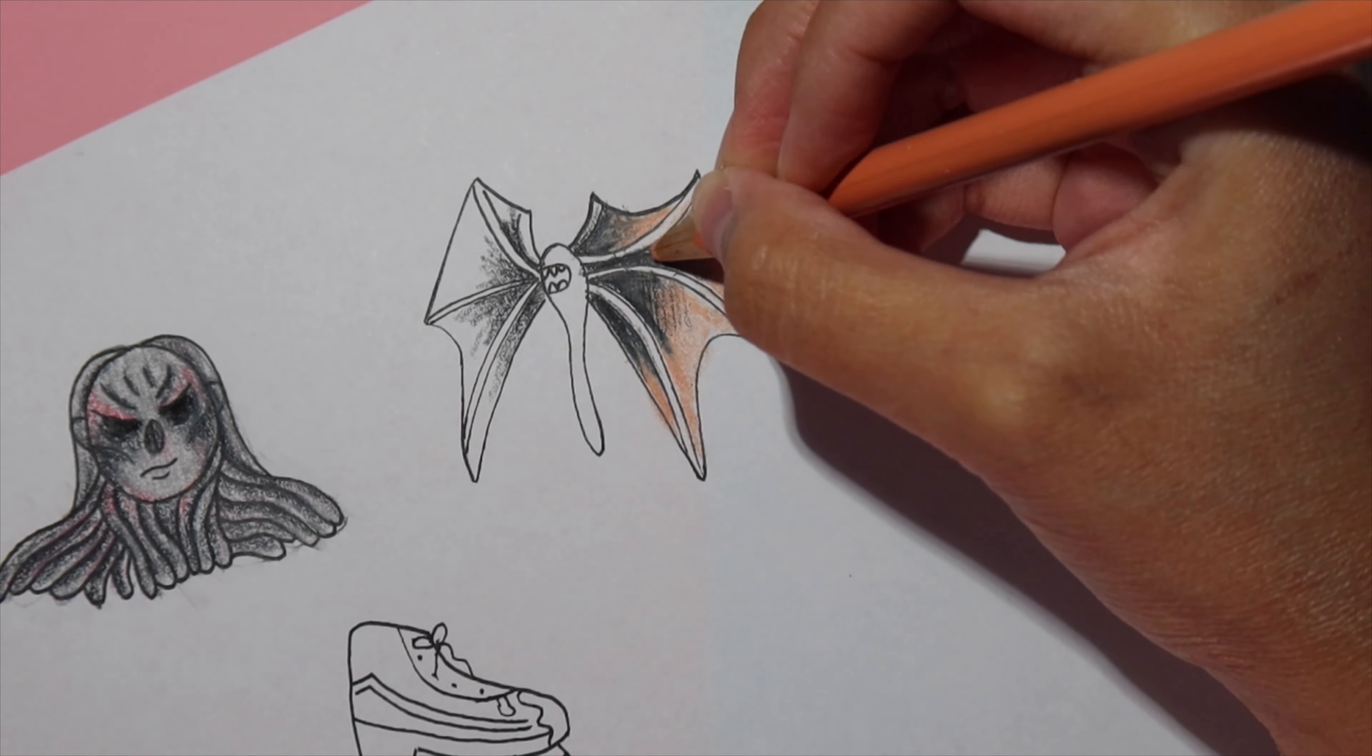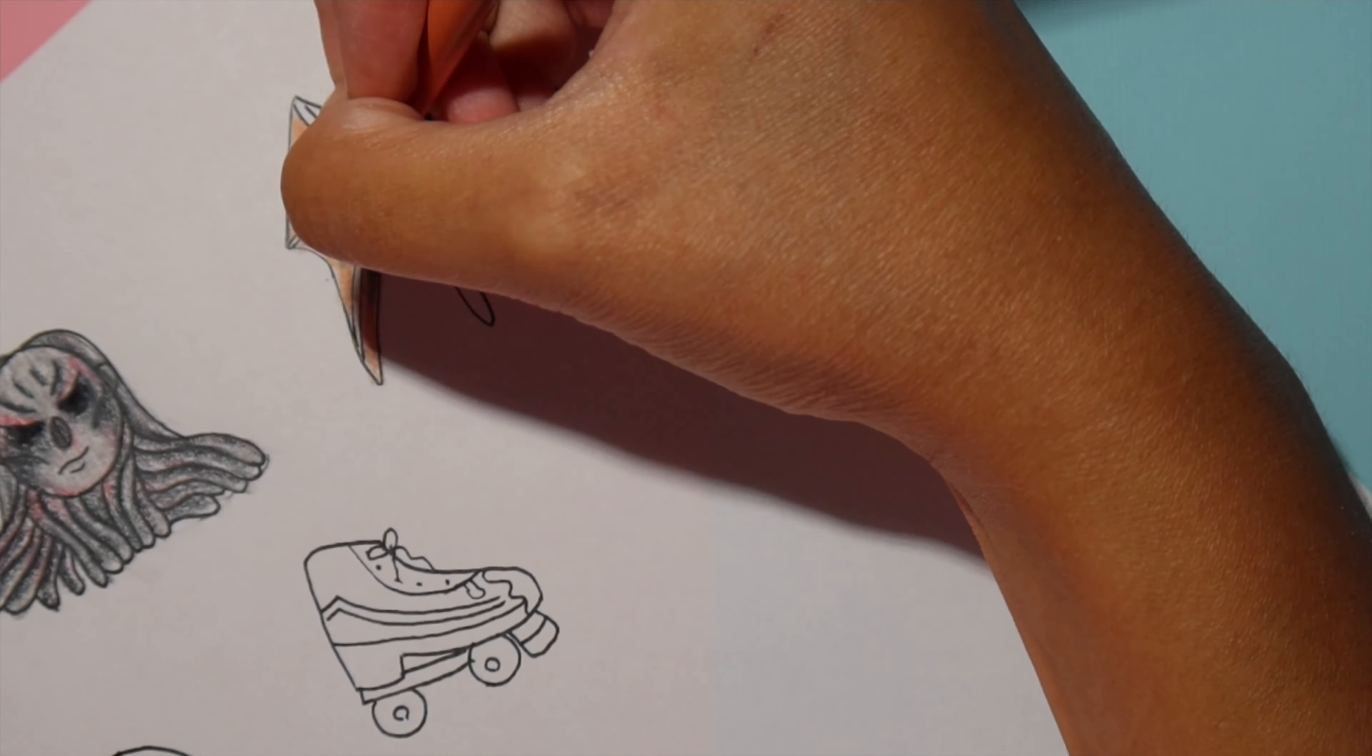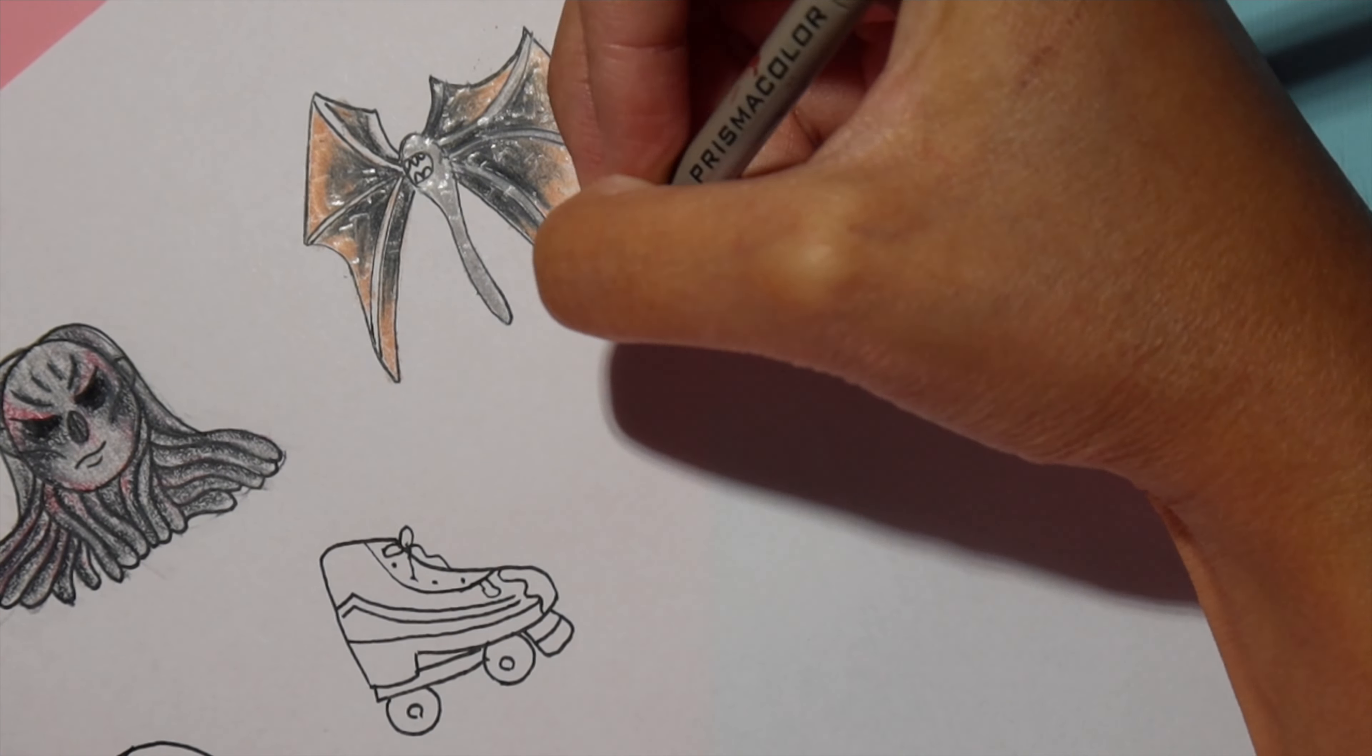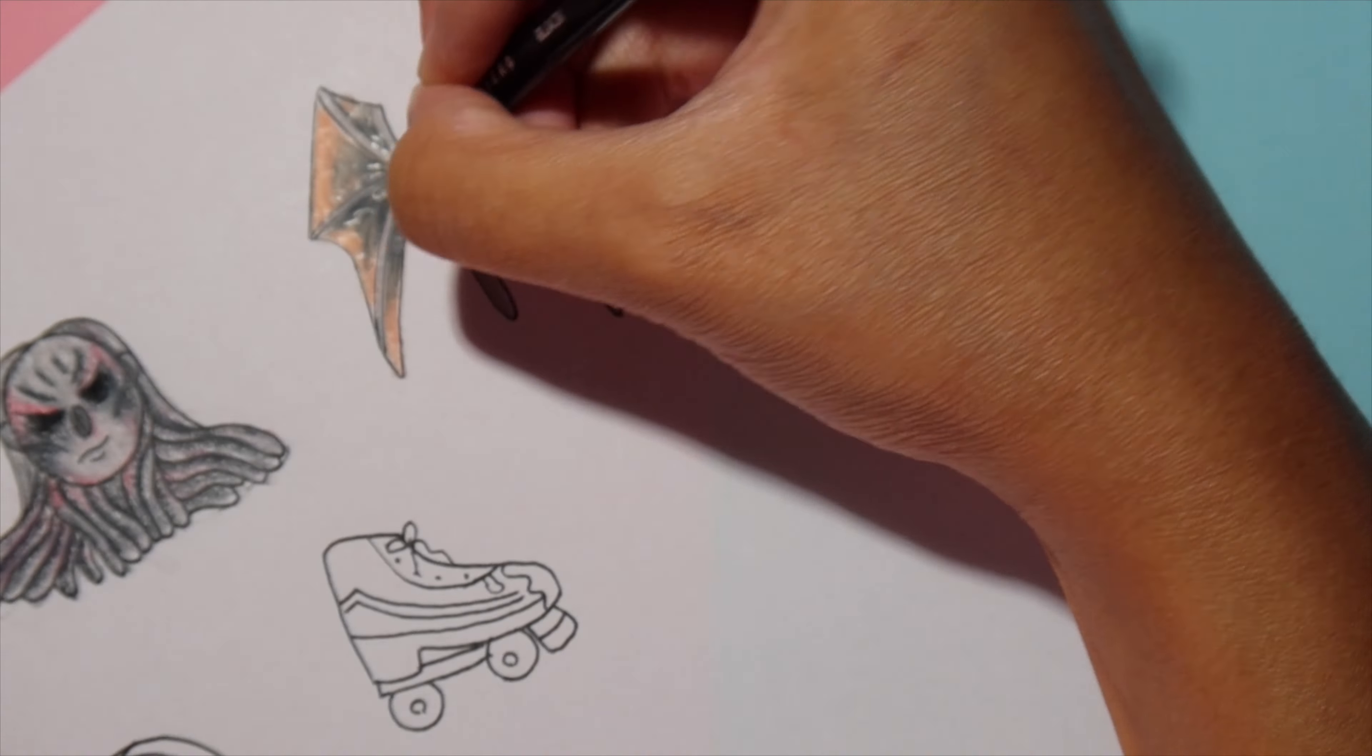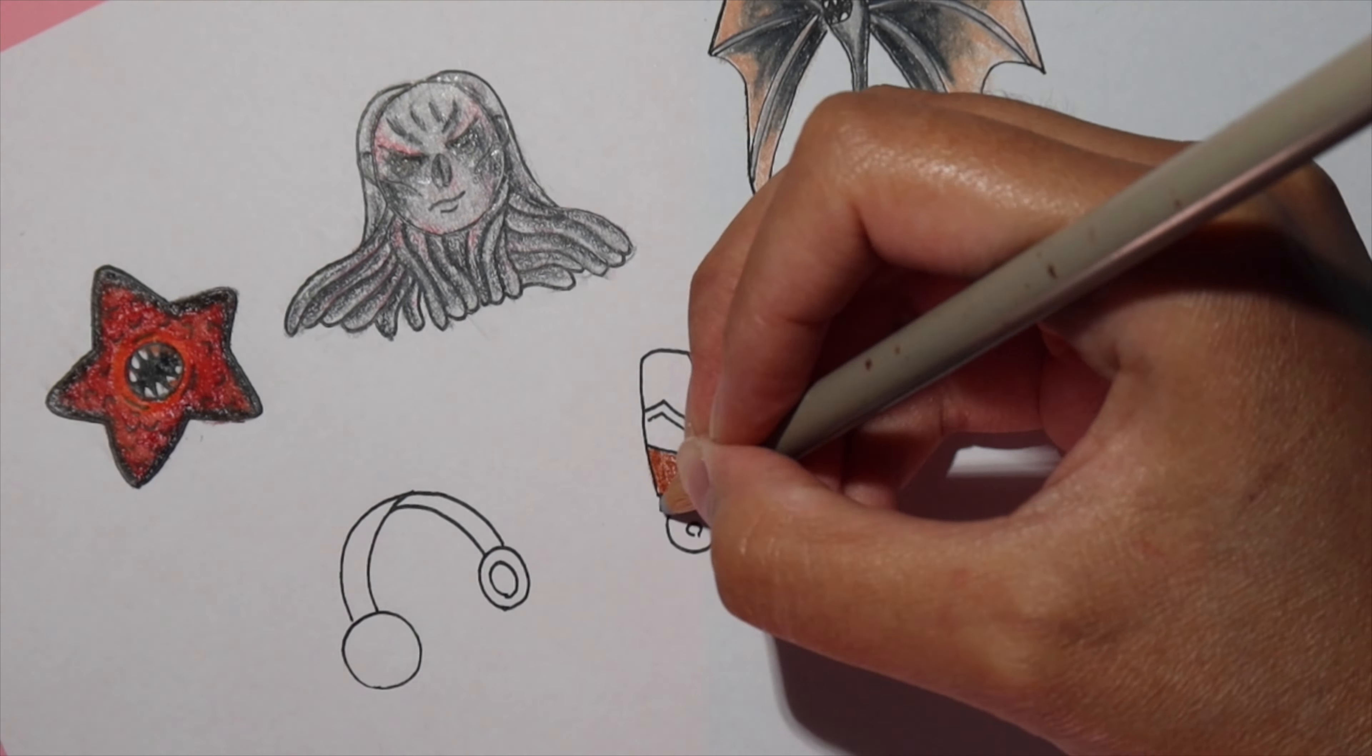And here with this bat creature, I'm not really sure what it's called. If you guys know, you should let me know because I just call it the upside down bat. But I'm going in and I'm coloring with a light orange or like peachy color for the wings. And then I'm creating those shadows with the black color pencil as well.